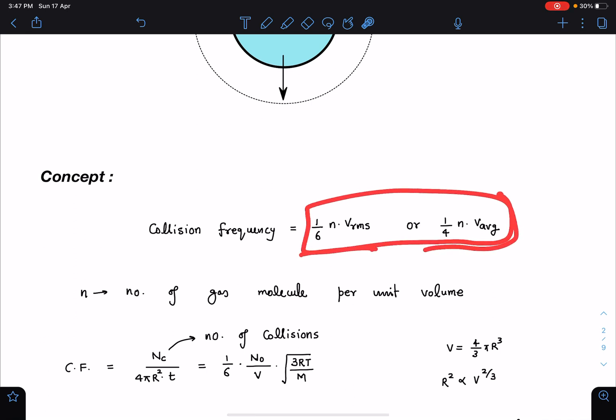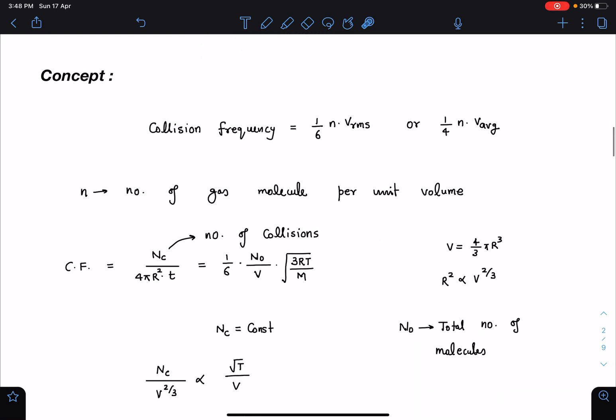However, I will suggest students to be vigilant on this because both formulas are used. I'll suggest you check the answer by both formulas and whichever is matching you can use that. The volume of the sphere I can write as 4/3 pi r cube, so from here r square will be proportional to volume to the power 2/3.